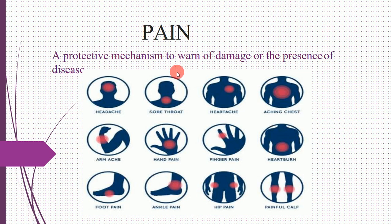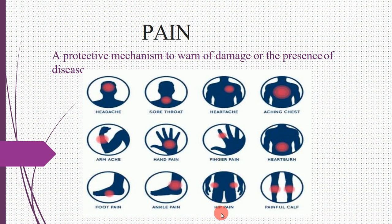Pain can be defined as a protective mechanism to warn of damage or the presence of disease. Examples of pain sensations include painful cough, heartburn, finger pain, hip pain, ankle pain, hand pain, foot pain, headaches, and throat pain. All of these are forms of pain — a protective mechanism warning of damage or disease.